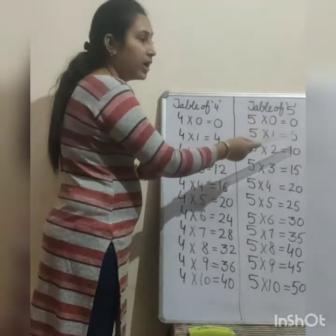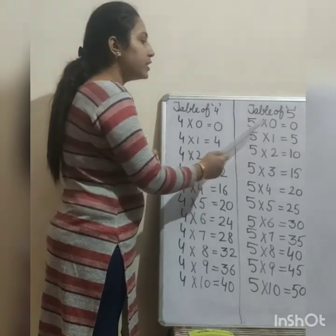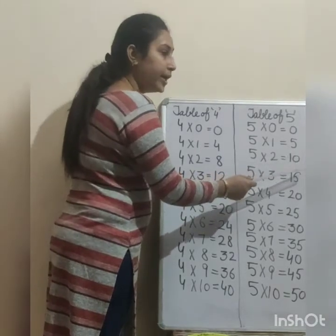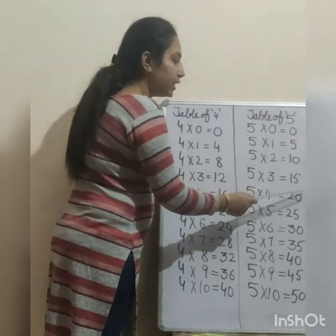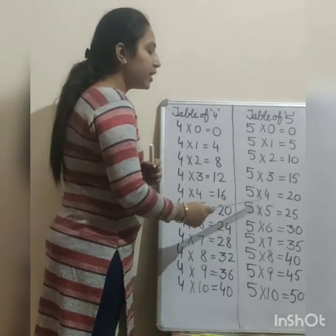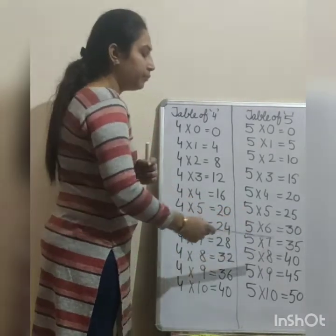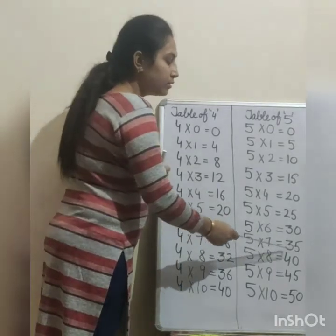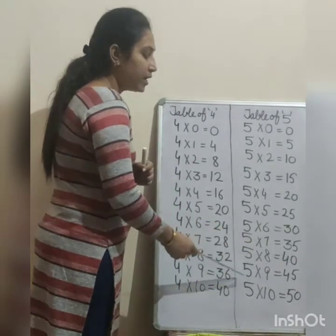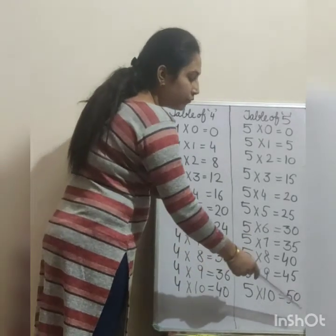Table of 5. 5 zeros are 0, 5 ones are 5, 5 twos are 10, 5 threes are 15, 5 fours are 20, 5 fives are 25, 5 sixes are 30, 5 sevens are 35, 5 eights are 40, 5 nines are 45, 5 tens are 50.